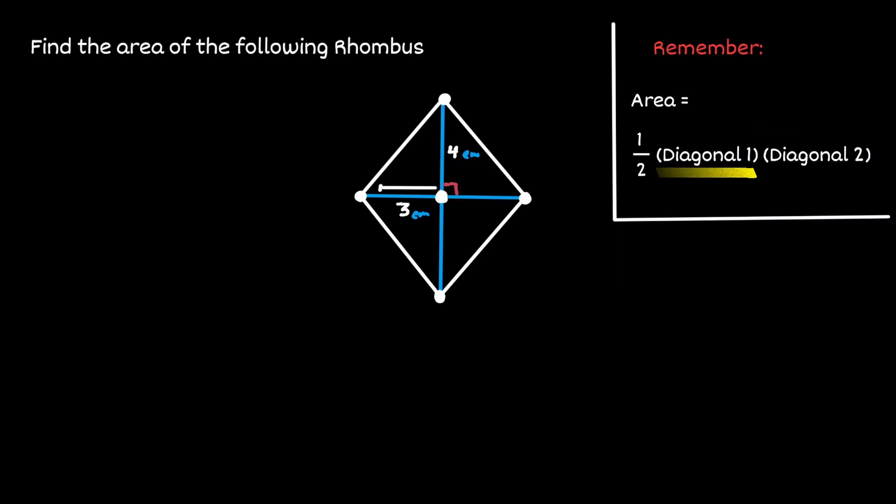Notice that we are only given half of the measurement of this diagonal, 3 centimeters. But one property about diagonals is that they bisect each other. So therefore, if this length is of 3 centimeters, then the other section of the same diagonal is also 3 centimeters. So now we know that the length of the first diagonal is of 6 centimeters.